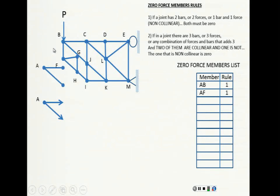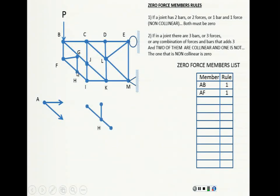If those members are zero, they don't exist. I'm going to remove them from the drawing to make it less complicated. Now keep looking for the rules. I don't see any joints with only two bars. With three bars — this joint has three bars plus a fourth, so it doesn't qualify. This one has three bars but no two are collinear. But this joint here has three bars, and two of them are collinear. So the one that is not collinear is zero. That element is GH, and that is rule number two.